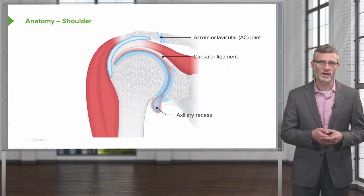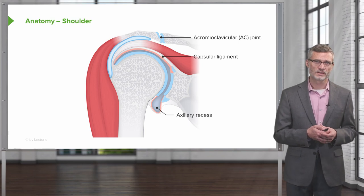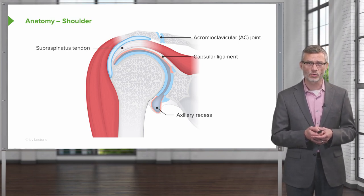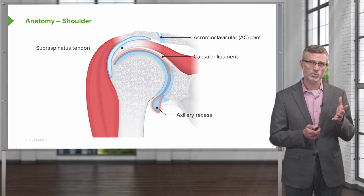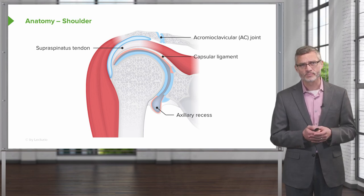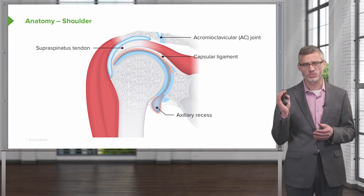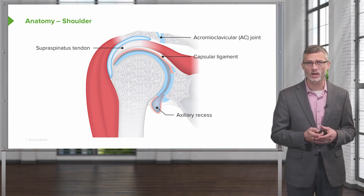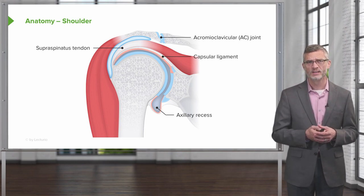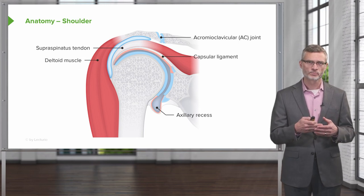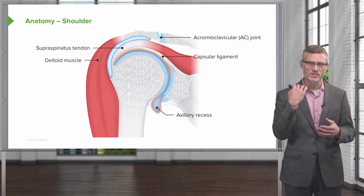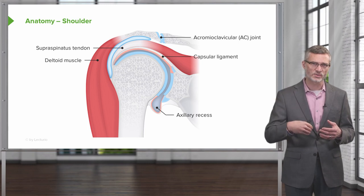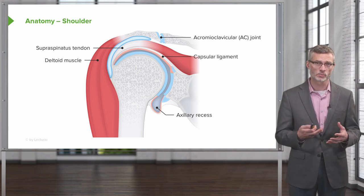With that, a brief review of the anatomy. Take note of where the supraspinatus tendon lies — this is of course a right shoulder. The supraspinatus tendon wraps around the top of the humeral head where it inserts very proximally, compared with the deltoid muscle, which is attached to the clavicle and the acromion and wraps much farther down on the humerus itself.